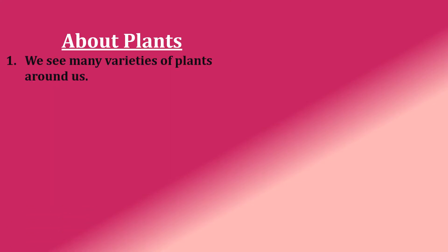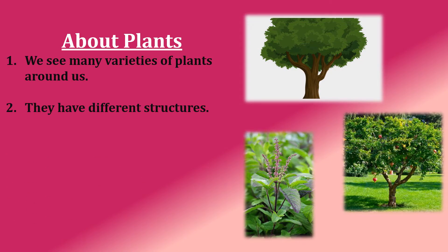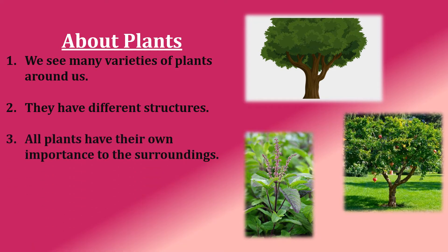About plants. We see many varieties of plants around us. They have different structure, shape and size. You can see three pictures of plants — they are looking very different from each other. All plants have their own importance to the surrounding, meaning to the environment and to the atmosphere.